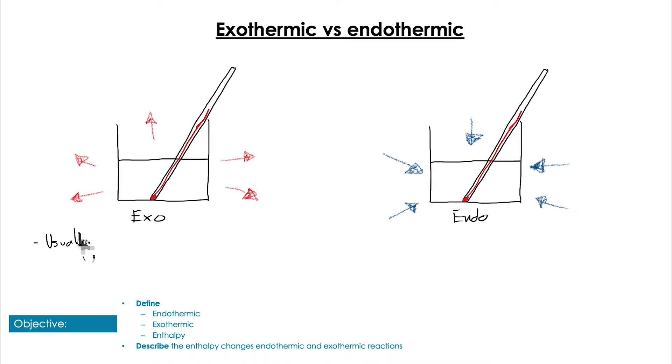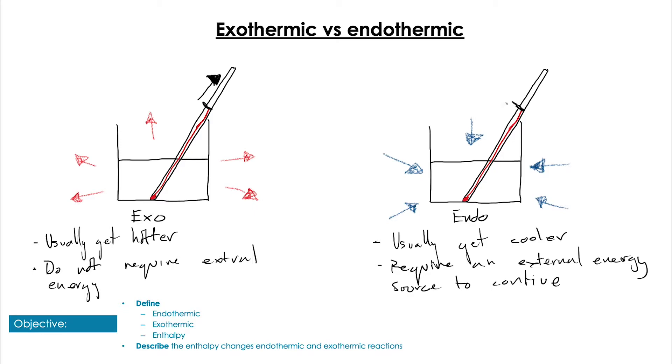So usually exothermic reactions get hotter while endothermic reactions get cooler. This also means that exothermic reactions tend not to require an external source of energy to continue, whereas endothermic do need external sources of energy to proceed. Which means we're going to see an increase in the thermometer measuring the temperature of reaction on exo and a decrease on an endothermic reaction. Remember, relating this to enthalpy, we're actually going to see an increase in enthalpy in the endothermic reactants and a decrease in enthalpy in the exothermic reactants.